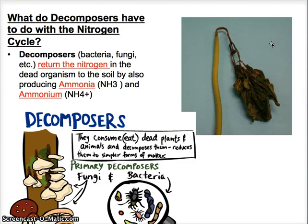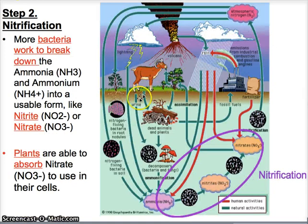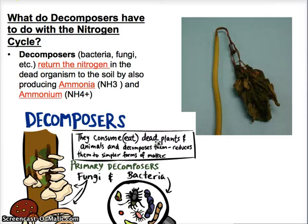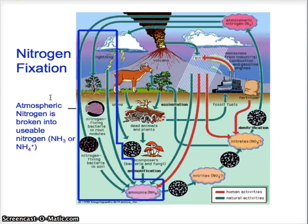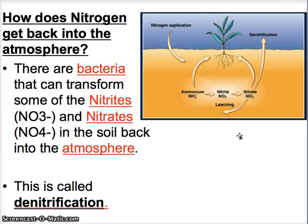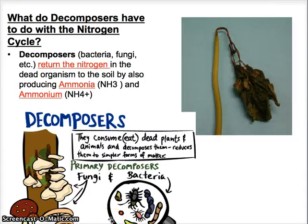Let's talk about the role of decomposers. In this diagram, you can see there are decomposers right in the middle. Decomposers are a big part of the nitrogen cycle because they break down dead plants and animals into carbon, as we learned in the carbon cycle, but they also break it down into different nitrogen forms — they produce ammonia and ammonium too. Those are things that bacteria will then break down into nitrites and nitrates. So decomposers are important to the nitrogen cycle.